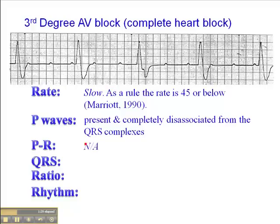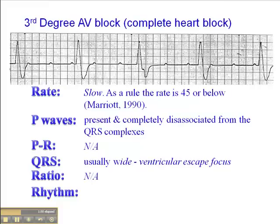There is no consistent PR interval, as we would see in second-degree AV block type 2. The PR interval is not really applicable since there are no consistent P-waves per QRS, because the waves of atrial depolarization are not getting through to the ventricles. The QRS is usually wide, because the focus in the ventricle pacing the heart is a ventricular escape focus. The ratio is not applicable, and the rhythm is regular.